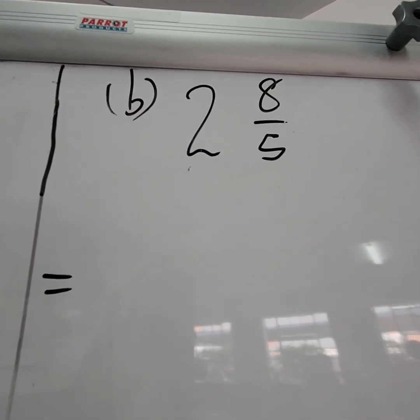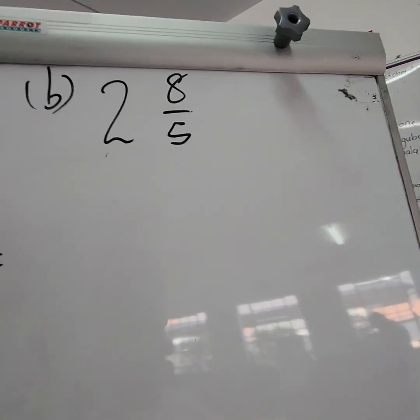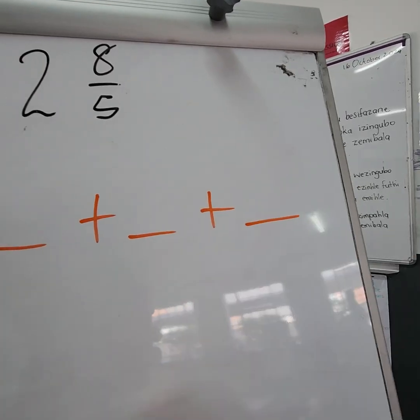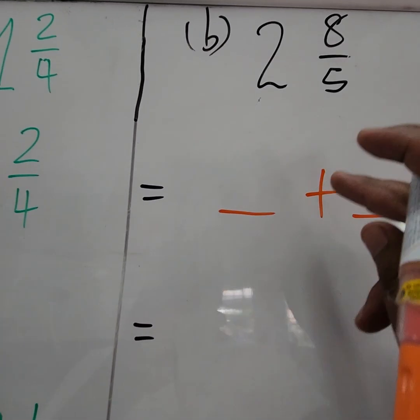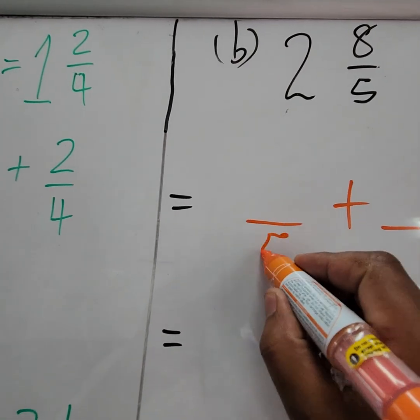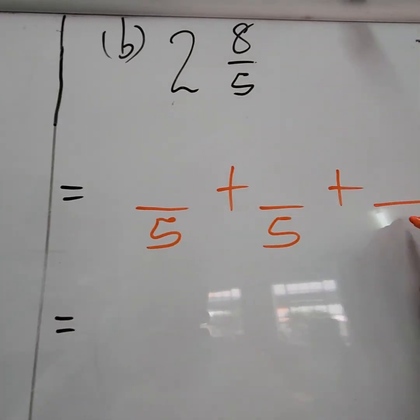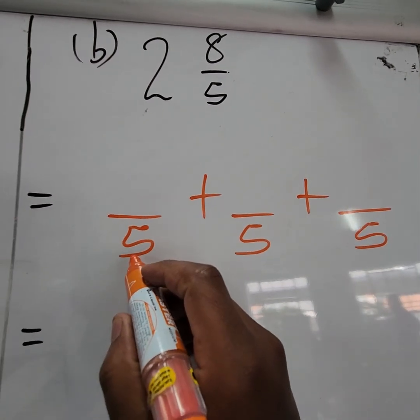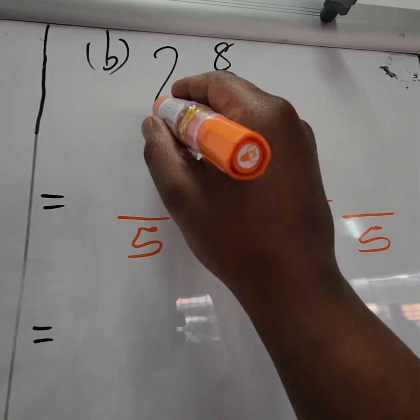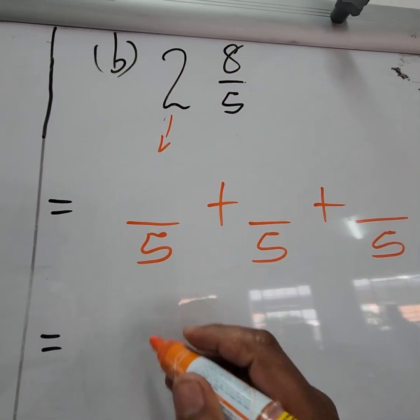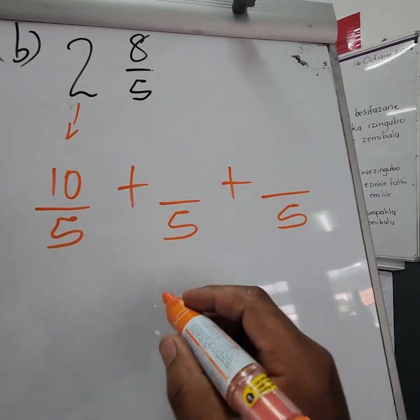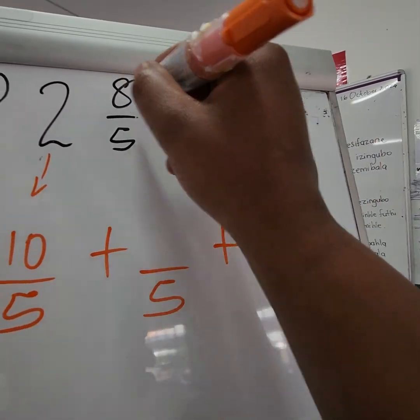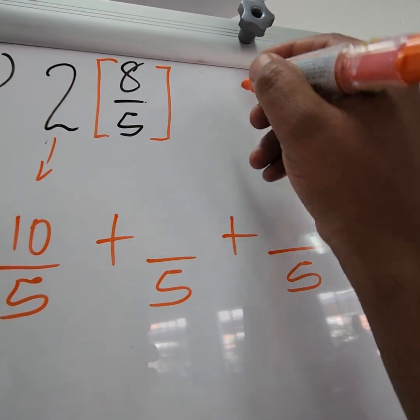Alright, so then we have our second method. Our second method is quite basic as well. Here, we know that we pick our denominator and apply it in all three of our spaces. And then the first space, we take this denominator, we multiply it with the two. So five times two, we get our ten. Then here we have 8/5, and then again we solve this, we turn it into a mixed fraction.